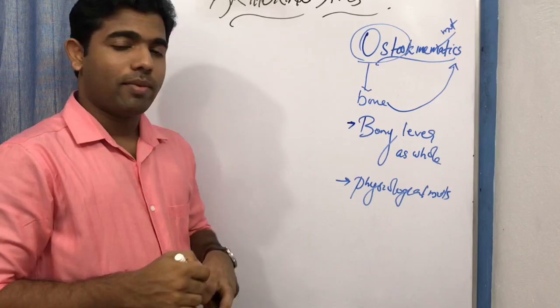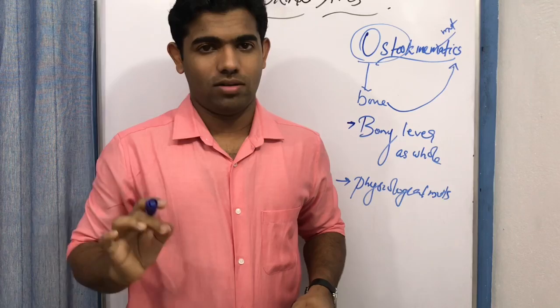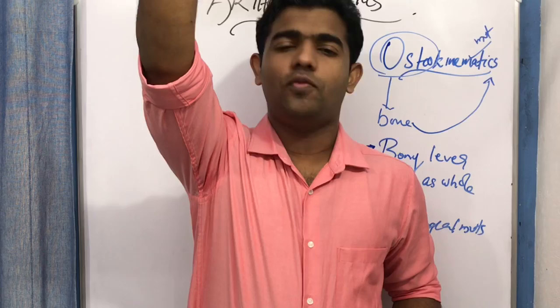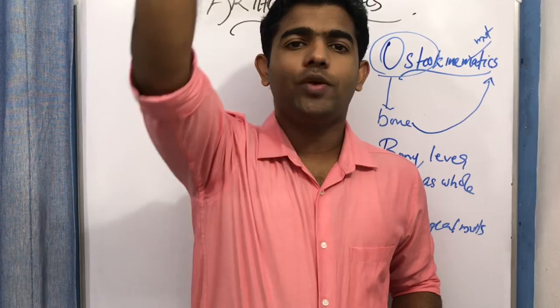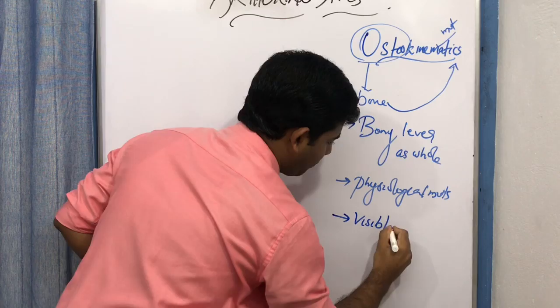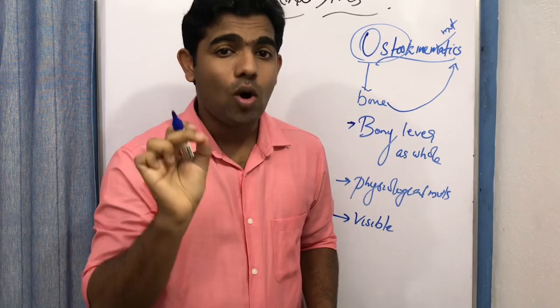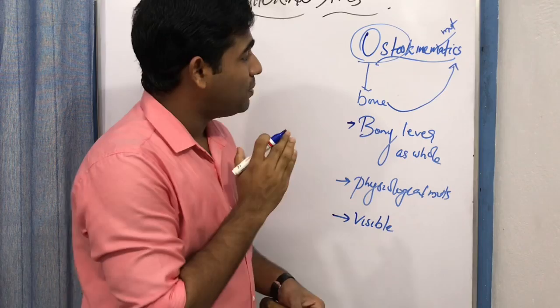Osteokinematics are the movements of the bone as a whole, and we can see them with the naked eye. For example, shoulder flexion is a movement of the humerus that we can observe. So osteokinematic movements are visible movements and normal physiological motions.